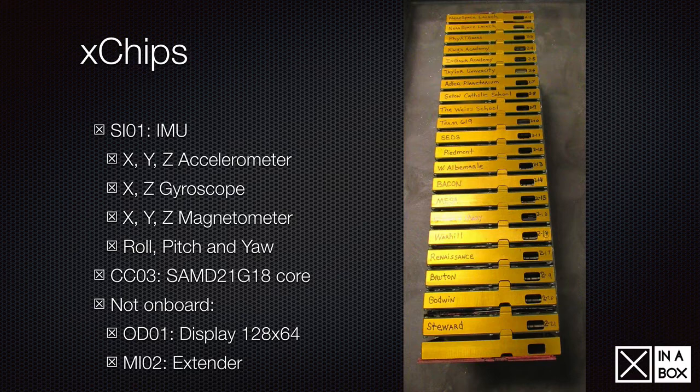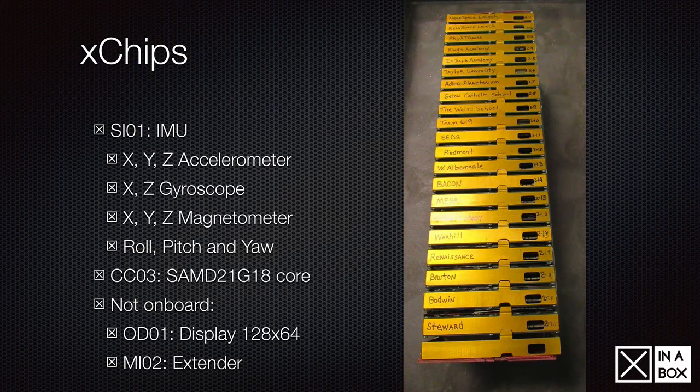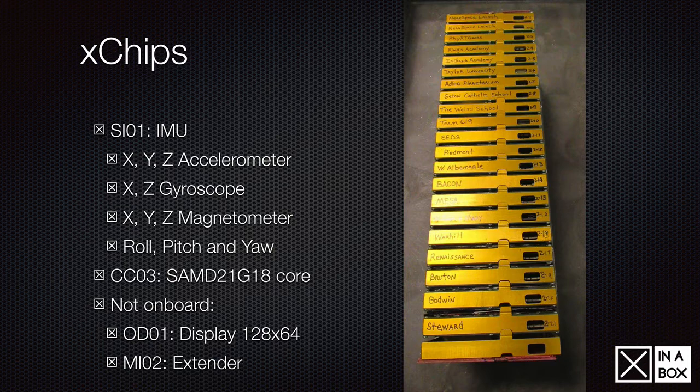Then, we have the CC03, which is the same D21G18 core, so it's the same as Arduino Zero. If you have programmed the Arduino, then the CC03 is exactly the same way as it is with Arduino Zero. You can go to the wiki and see how that works, if you want to program it yourself. And then, what's on board is an OD01 and an MIO2 you saw before that was sticking out the board, which is just to verify that the X-chips have indeed been assembled correctly and mounted correctly inside the ThinSat.